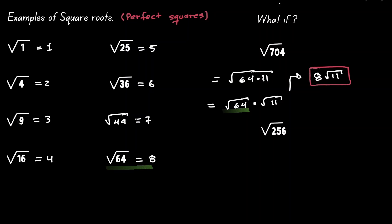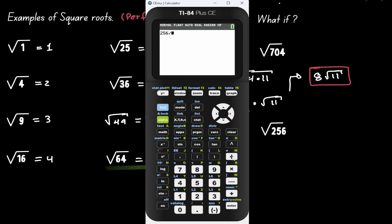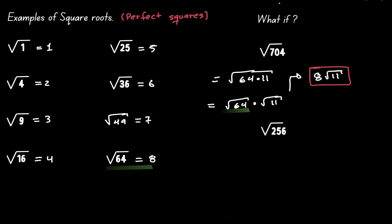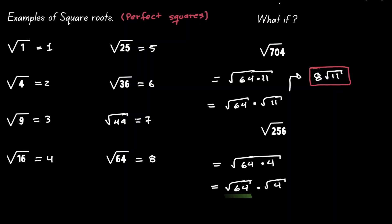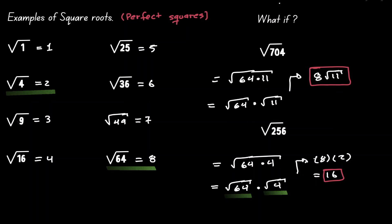Let's try this same technique with the square root of 256. Starting by dividing by 49 gives a decimal — doesn't work. Trying 64 gives an output of 4. So 256 can be written as 64 times 4. Separating the square root: square root of 64 times square root of 4. We know the square root of 64 is 8, and the square root of 4 is 2. So we get 8 times 2, which is 16. We were able to simplify the square root of 256.